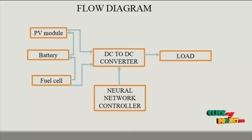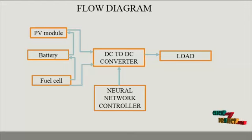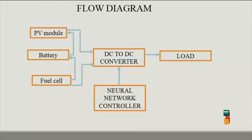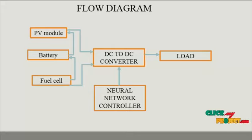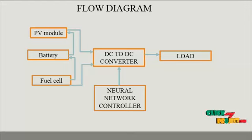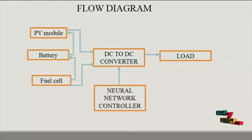That technique is implemented in the PV module photovoltaic systems. The next source is the battery. An electric battery is a device consisting of one or more electrochemical cells with external connections provided to power electrical devices such as flashlights, smartphones, and electric cars. When a battery is supplying electric power, its positive terminal is the cathode and its negative terminal is the anode. The anode is the source of electrons that, when connected to an external circuit, will flow and deliver energy to an external device. When a battery is connected to an external circuit, electrolytes are able to move as ions within, allowing the chemical reaction to be completed at the separate terminals.